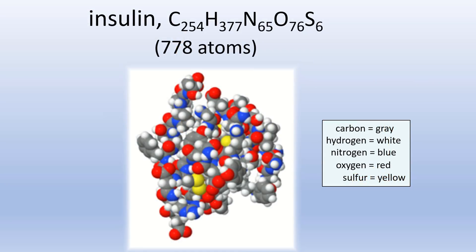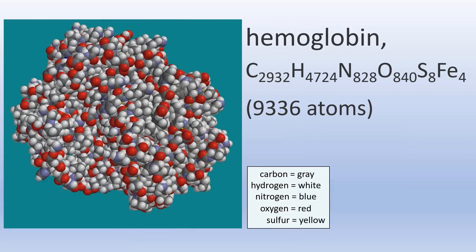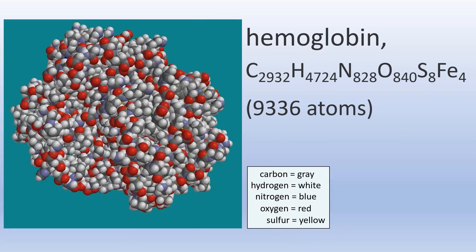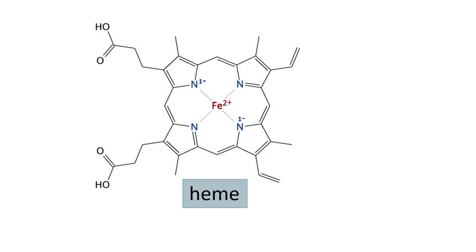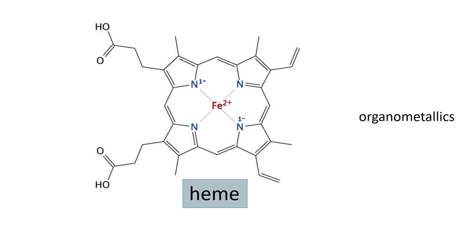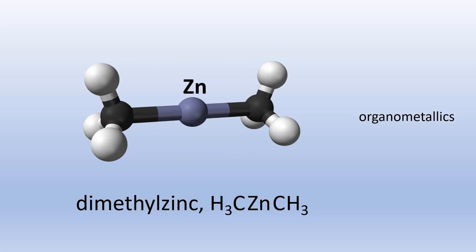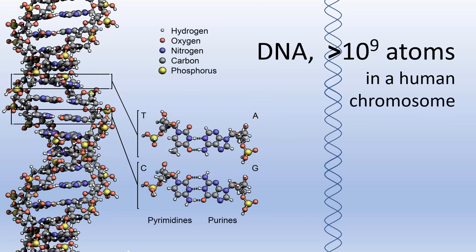Carbon's versatility in bonding means it can be used to build extremely large molecules, such as the protein insulin with 778 atoms or the protein hemoglobin with 9,336 atoms. Bonding with metals again expands carbon's versatility, such as heme, where iron binds to nitrogen in a carbon-based structure used to bind oxygen in hemoglobin, or dimethyl zinc in which carbon bonds directly to the metal. DNA is the largest known molecule, with more than a billion atoms in the DNA of a single human chromosome.